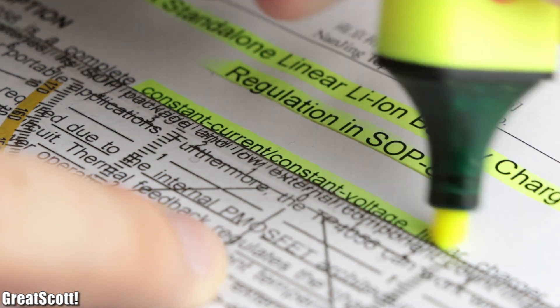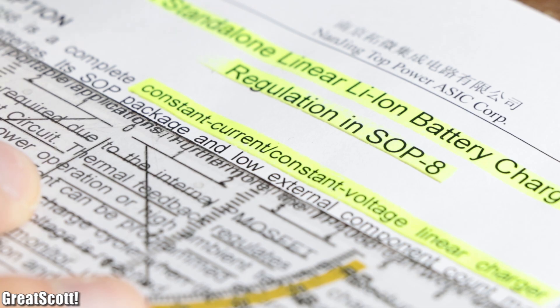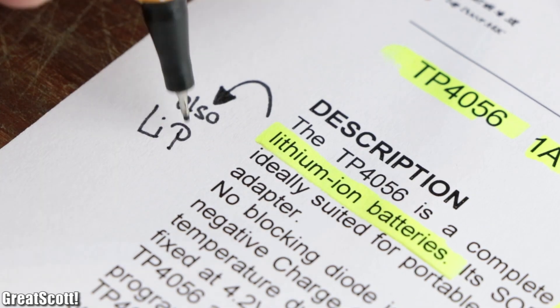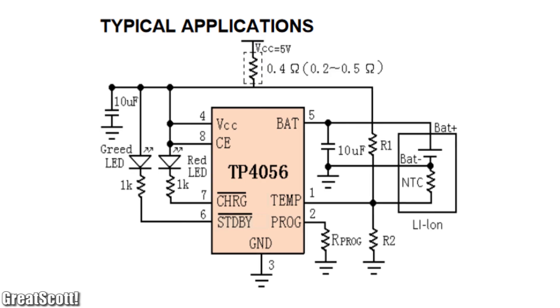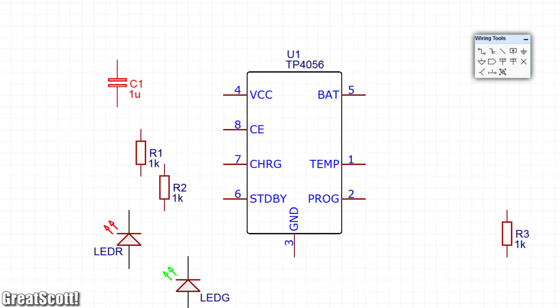According to its datasheet it is a constant current, constant voltage, single-cell lithium-ion charger IC which thus obviously also works with a LiPo cell.